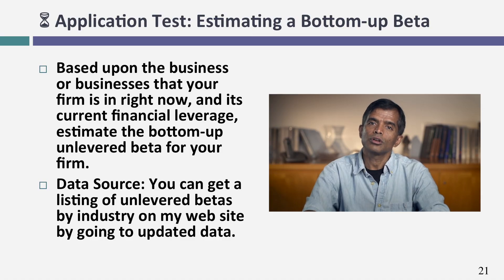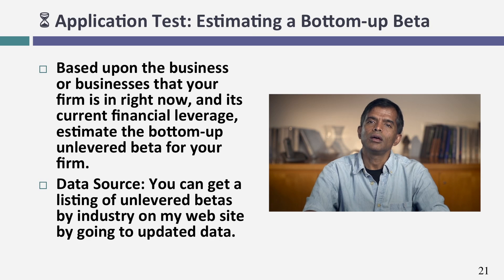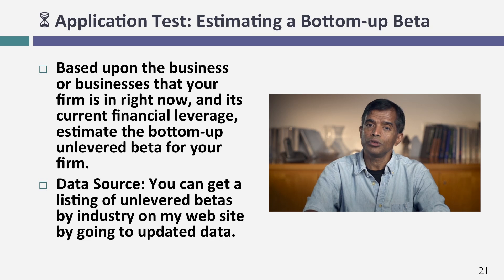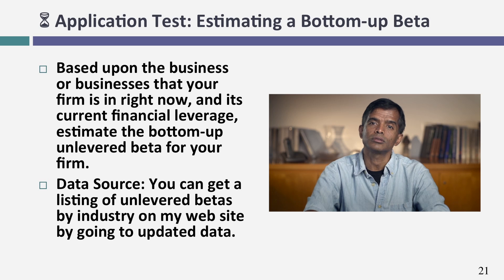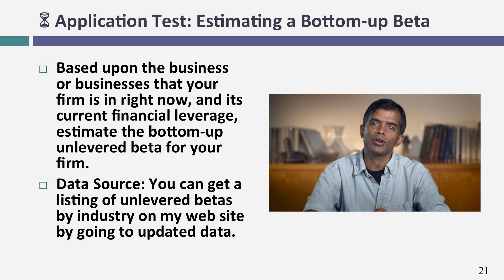So if you're looking at your company, break it down into businesses, come up with a beta by business, and estimate a beta for your company as a weighted average. If you have trouble getting betas by business, my website has betas by business estimated at the start of every year for U.S. companies, emerging market companies, European companies, Japanese companies, and global companies. It's a much better way of estimating betas than running one regression, taking the slope, and treating it as your company's beta.